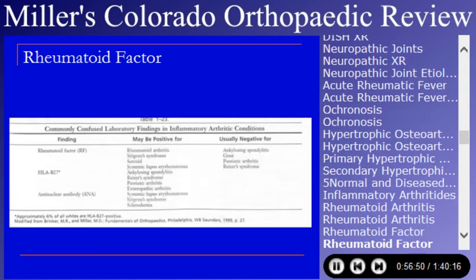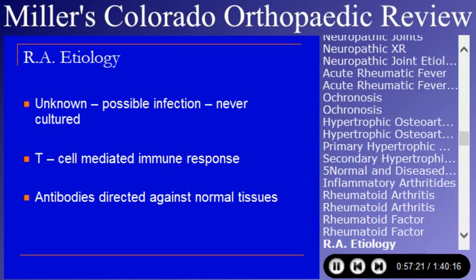Rheumatoid factor is also seen in Sjögren's syndrome, sarcoidosis, and lupus. HLA-B27 is seen in the seronegative spondyloarthropathies — you will get asked that regularly. ANA is seen in systemic lupus, Sjögren's, and scleroderma, with systemic lupus being the disease of major orthopedic import.